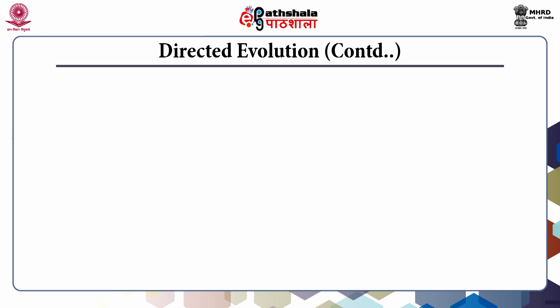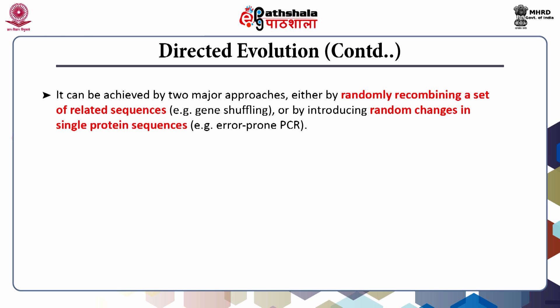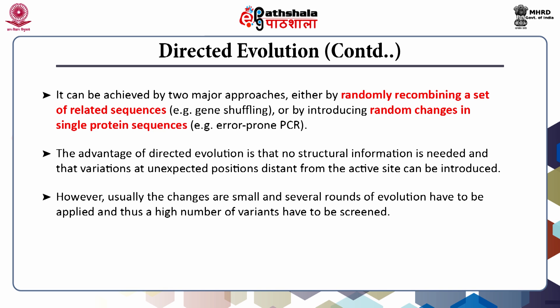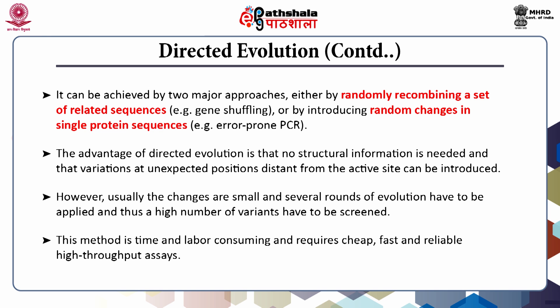Directed evolution can be achieved by two major approaches: either by randomly recombining a set of related sequences, for example gene shuffling, or by introducing random changes in a single protein sequence, for example error-prone PCR. The advantage of directed evolution is that no structural information is needed and that variations at unexpected positions distant from the active site can be introduced. However, the changes are usually small and several rounds of evolution have to be applied, requiring screening of a high number of variants. This method is time and labor consuming and requires cheap, fast, and reliable high-throughput assays.